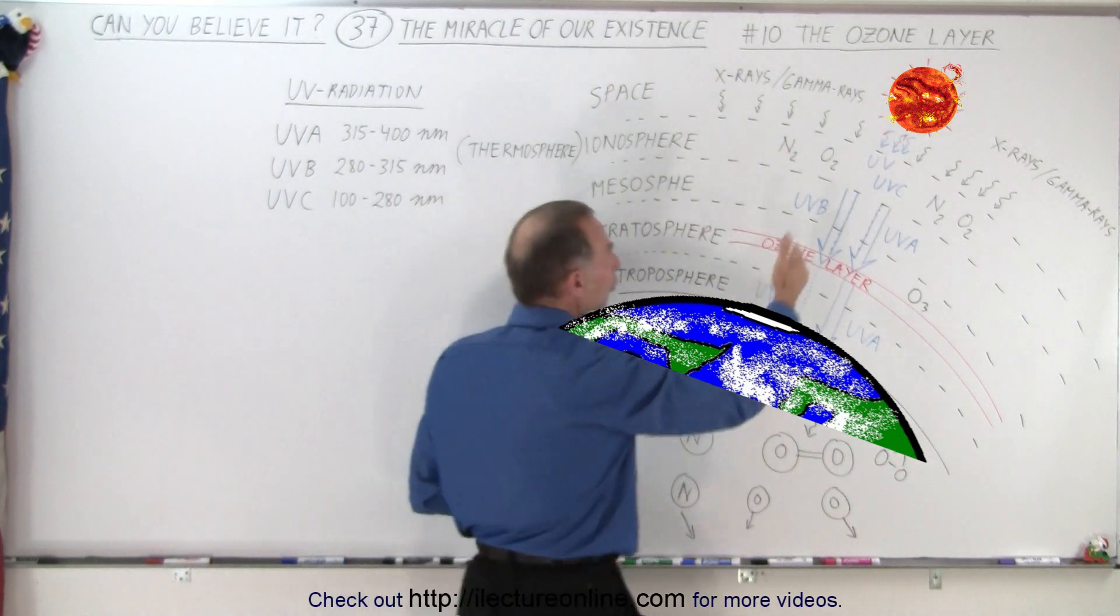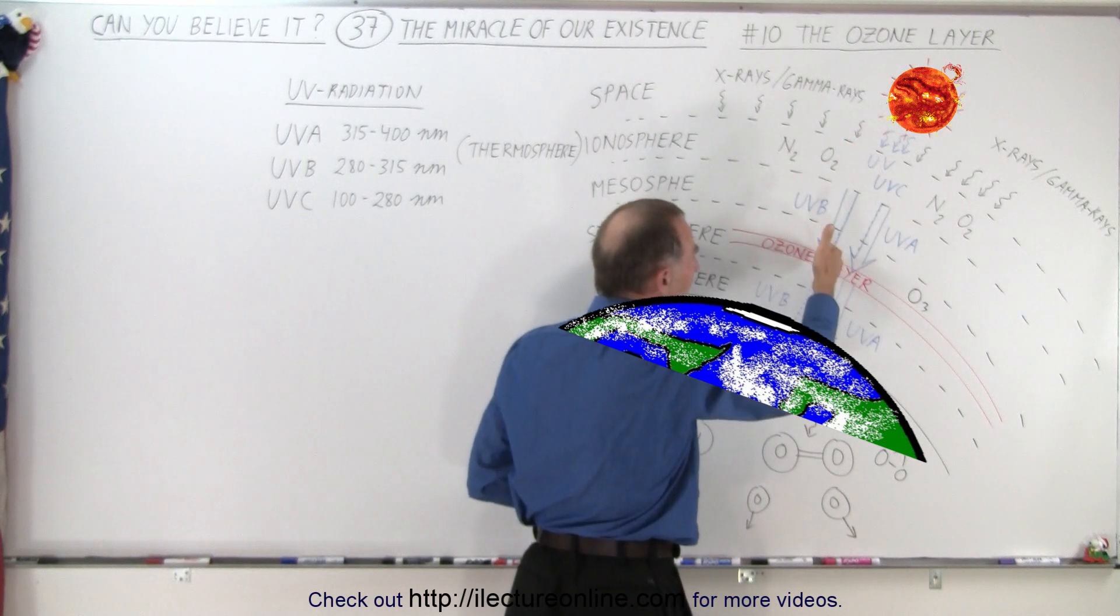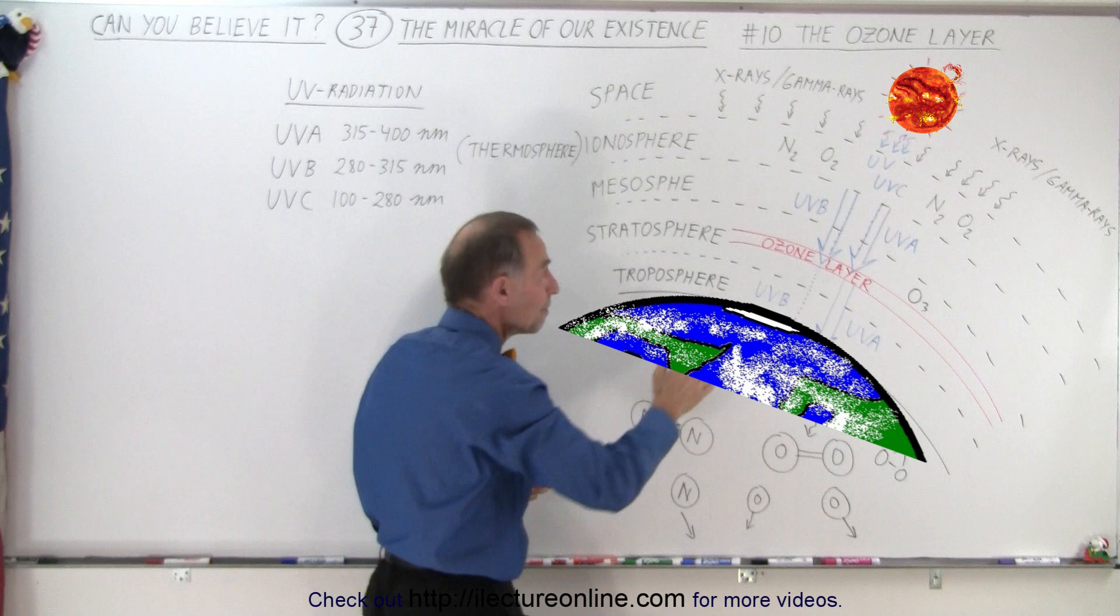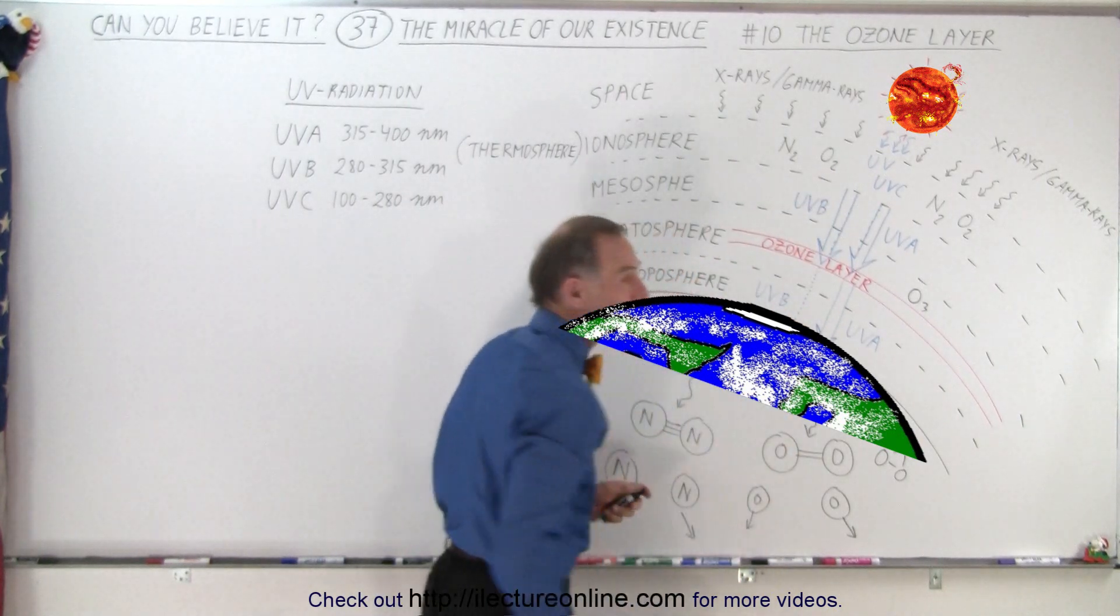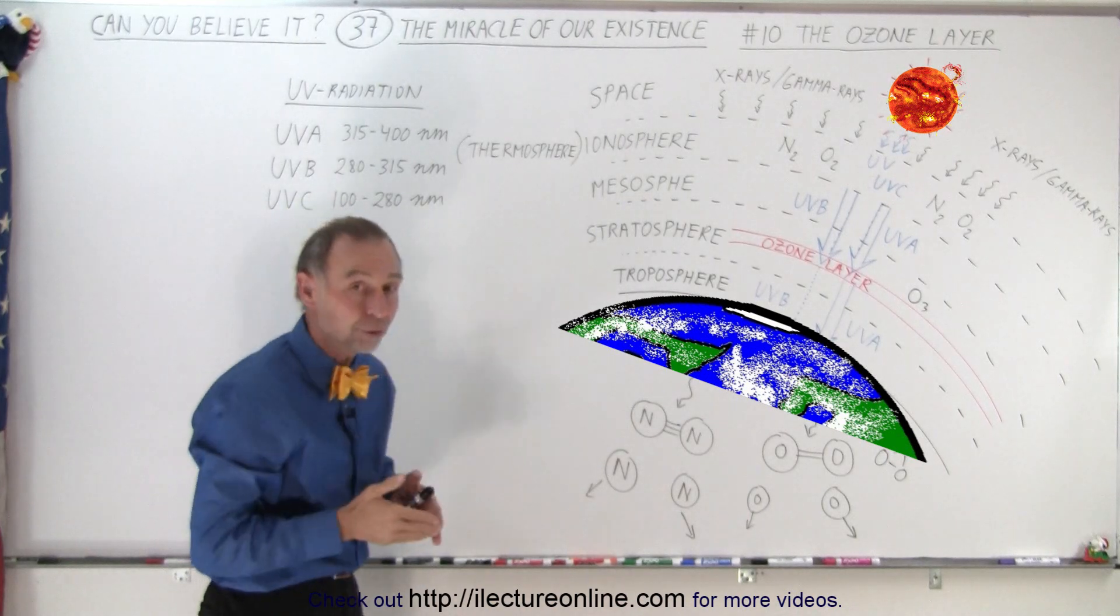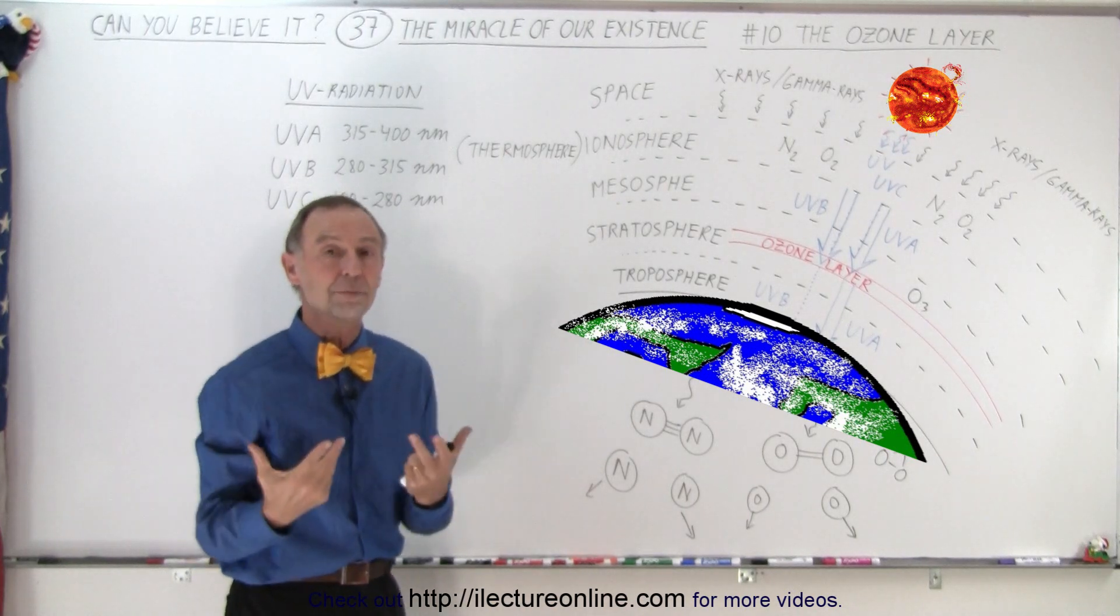It turns out that of all the UVB that hits the ozone layer, a very tiny fraction, about 1% or so, makes it through the ozone layer and reaches the surface of the earth. And that very tiny percentage of UVB radiation that comes through is enough to cause sunburns.